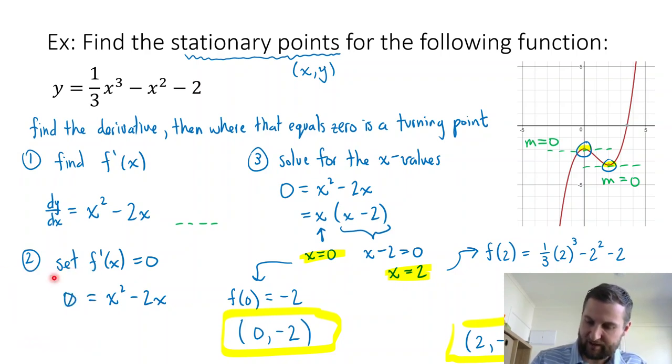One last question is, if we know the point zero comma minus two, how can we tell if it's a maximum or a minimum? How do we know if it is a peak or a trough? And similarly with my other point, how do I know which one is which? Between a max and a min, maybe they're both local maximums. And that will be our next topic.